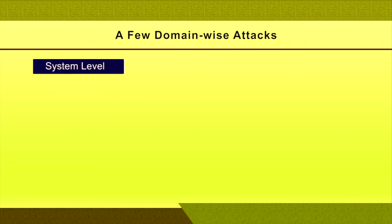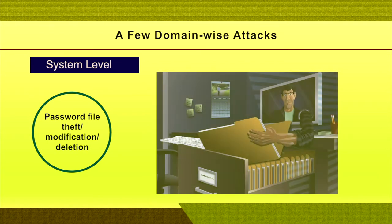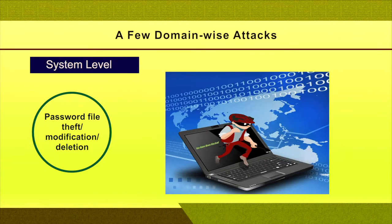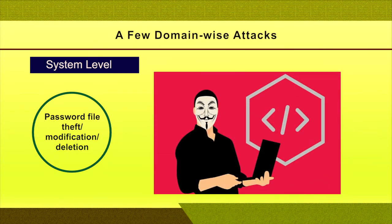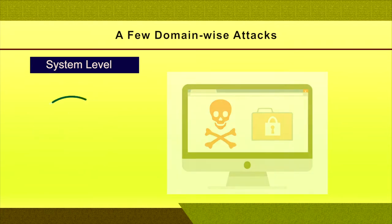Some attacks at the system domain or system level include: password file theft, modification, or deletion. As far as a server is concerned, the password file contains all genuine users' data. If that data is captured, modified, or deleted, it creates a major chaotic situation. That's why hackers play a role in targeting the password file — modifying or deleting entries or maybe the entire file. Similarly, port sweeping — at the system level, depending on services and applications, ports are opened or closed to regulate traffic, and port sweeping is also one of the attacks at the system level.